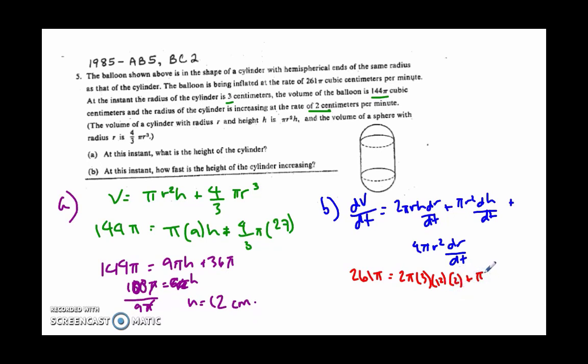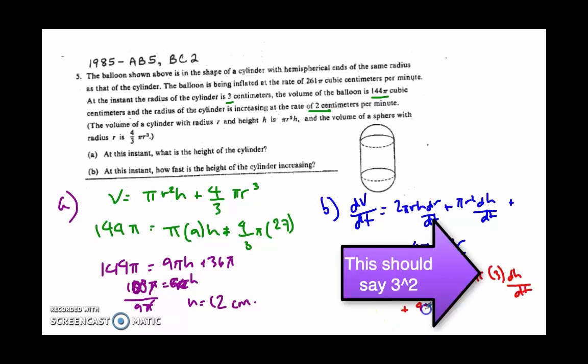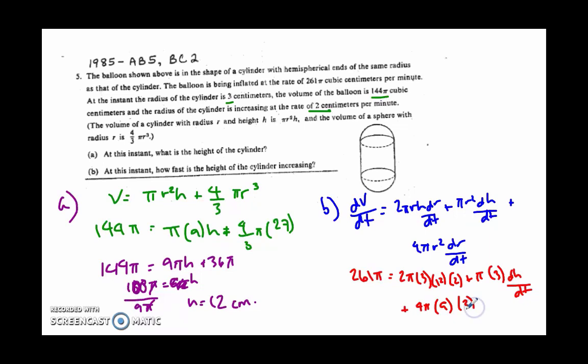Again, we know that r is 3. We don't know dh dt. We're looking for it. Plus 4 pi r squared. r is 3. So 3 squared is 9. dr dt, again, is 2. So now I have a lot of cleanup work to do.